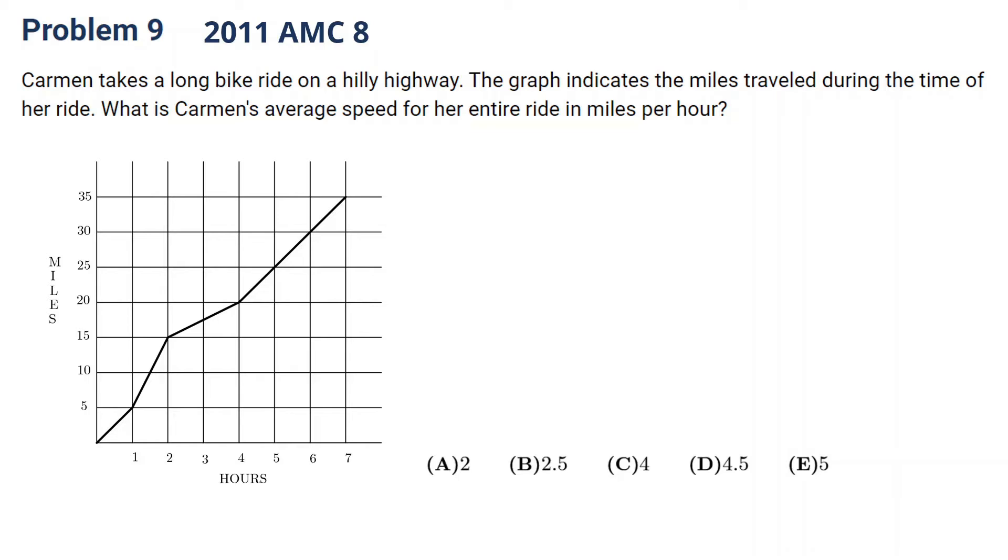This is 2011 AMC problem 9. Let's pause the video and take a look. Okay, let's see it. Carmen takes a long bike ride. The graph indicates the miles traveled during the time of her ride. What's the average speed for the entire ride in miles per hour? Here, should be careful with the unit. Here the unit is asking for miles per hour. And what's the average speed? We normally see speed, but what is average speed? You can see here the speed is not a constant.